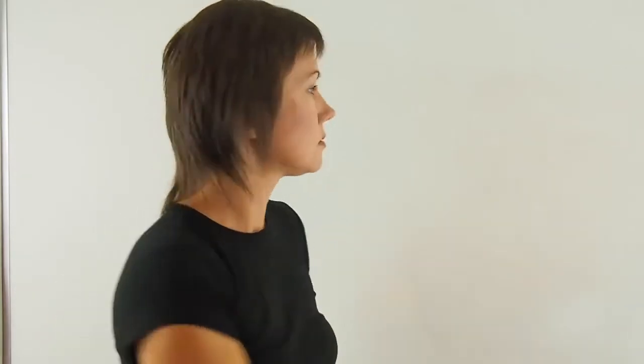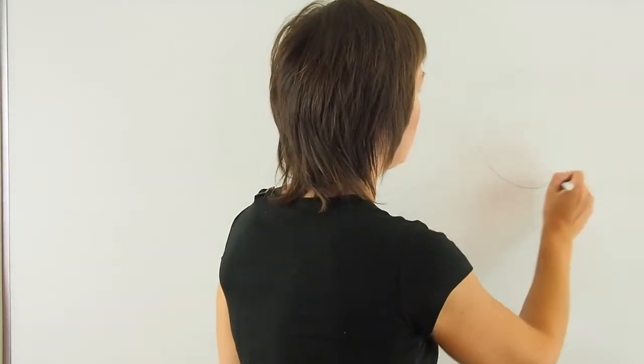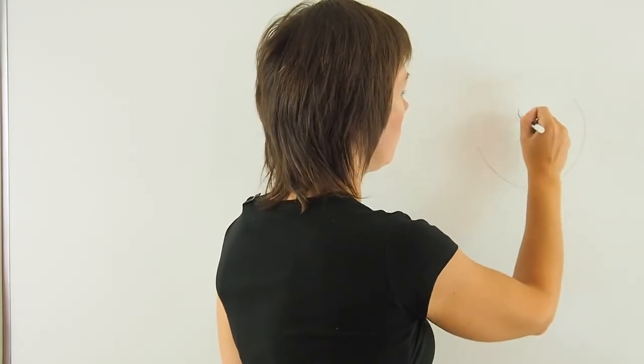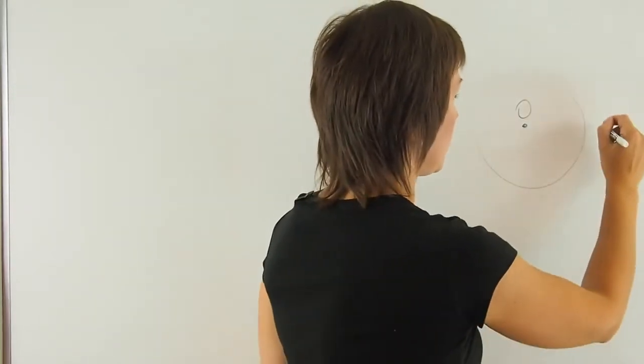Before we talk about graphs, let's look at a circle and the angles of a circle. Say I have a circle with a center O. The complete circle is 360 degrees.